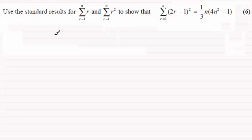Okay, welcome back. For this one we need to prove that the sum of (2r - 1)² with r going from 1 to n is equal to (1/3)n(4n² - 1).